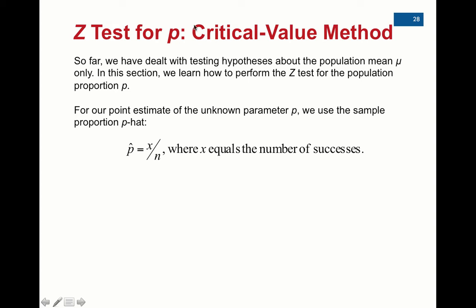When we are estimating the population proportion, we're going to use an estimate of p-hat. We've done this before in confidence intervals, so if we have the unknown parameter p, we estimate that with p-hat, the sample proportion.